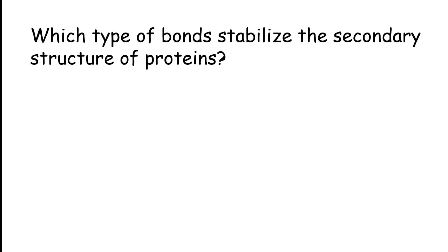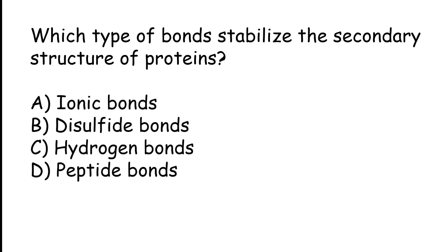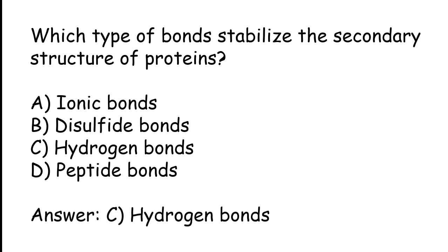Which type of bonds stabilize the secondary structure of proteins? Options: ionic bonds, disulfide bonds, hydrogen bonds, peptide bonds. The correct answer is option C: hydrogen bonds.